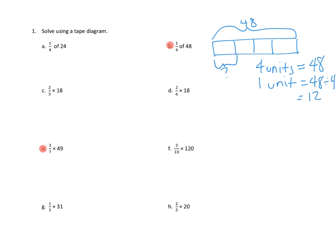And that's actually all we're looking for. In this case, we're just looking for one of those units, one fourth. So I think we've got our answer. Our answer is 12. One of those four chunks would be 12.